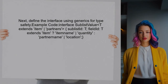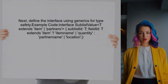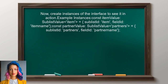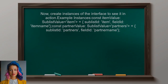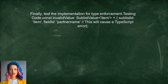Next, the user should define the interface using generics. This way, the interface can adapt based on the value of the sublist ID, ensuring type safety. Now the user can create instances of this interface — they can specify the sublist ID and TypeScript will infer the correct type for field ID based on that value. Finally, the user can test the implementation to ensure that TypeScript correctly enforces the conditional types.